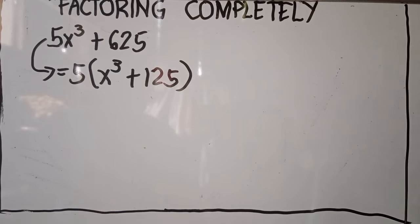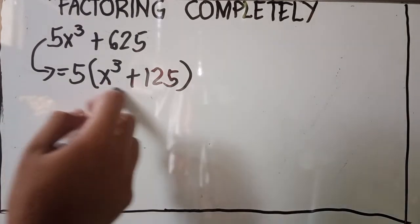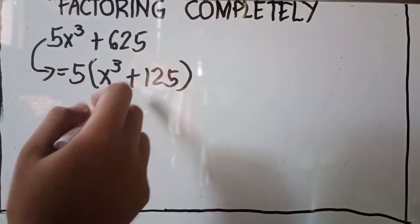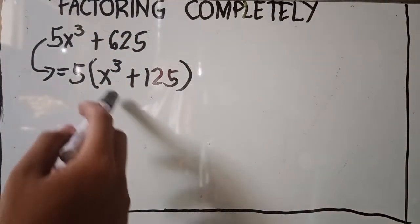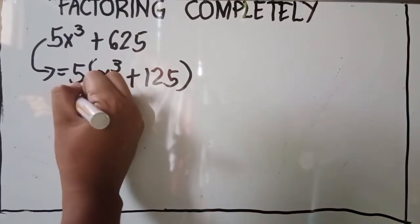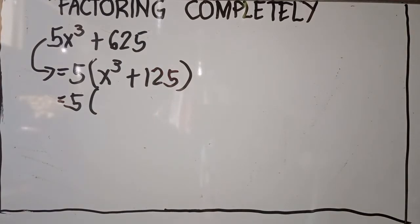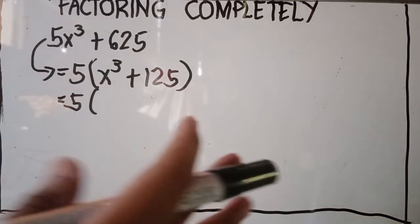x³ + 125 — remember, we have an expression called the sum of two cubes. This format is still in the form of sum of two cubes, therefore this can still be factored out. So we rewrite 5 and then factor out using the sum of two cubes rules.